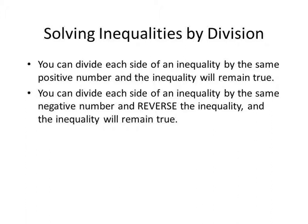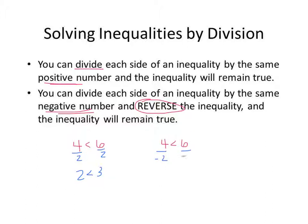So far all of our examples have involved multiplying both sides, but you might occasionally have to divide both sides. Two properties: you can divide both sides by the same positive number and you're fine, but if you divide by a negative number, you must reverse the inequality. For example, 4 is less than 6 — divide by 2 and you get 2 is less than 3, still true. But divide by negative 2 and you'd get negative 2 is less than negative 3, which is false. Reverse the sign and it works.